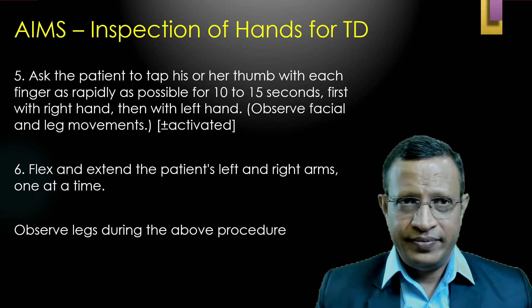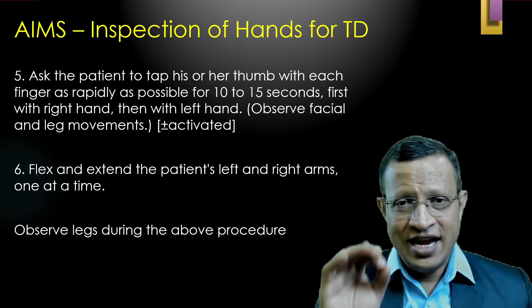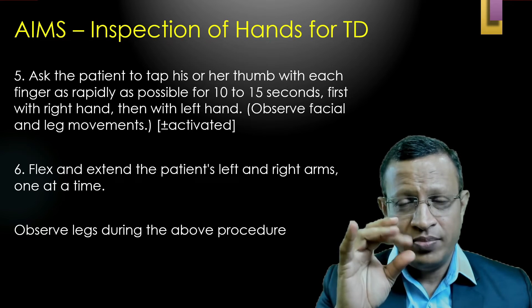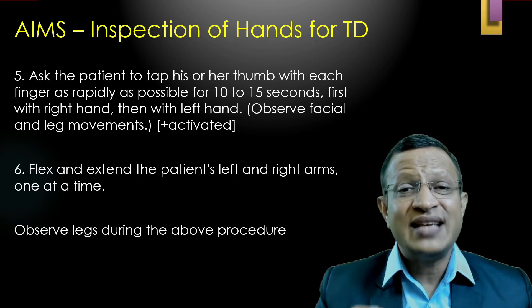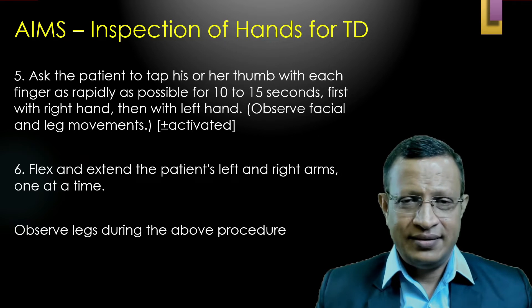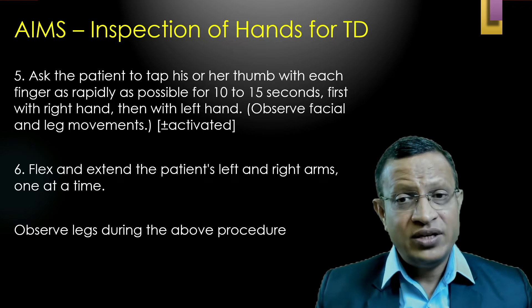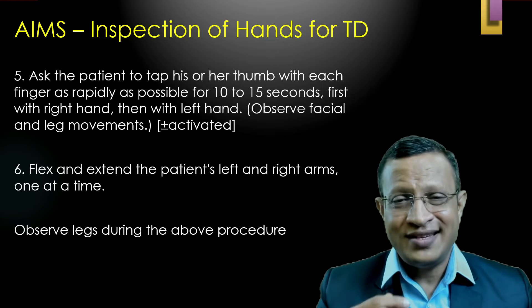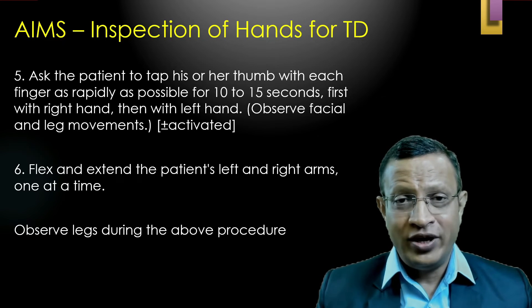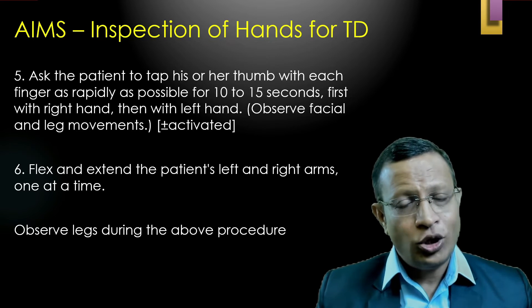Step five: ask the patient to tap his or her thumb with each finger as rapidly as possible for 10 to 15 seconds. While the patient performs this activation procedure, observe for any movements in the facial, periorbital, perioral, limb, and leg areas. This activation procedure is very important — note any movements not seen without activation. However, when coding, score one level less for activation procedure findings. If the patient shows moderate severity on activation, score as mild.